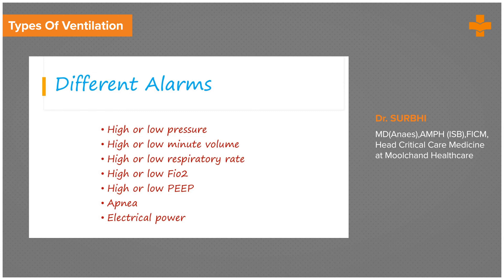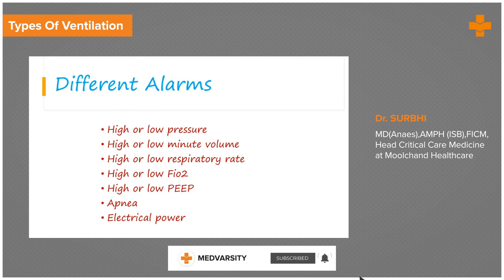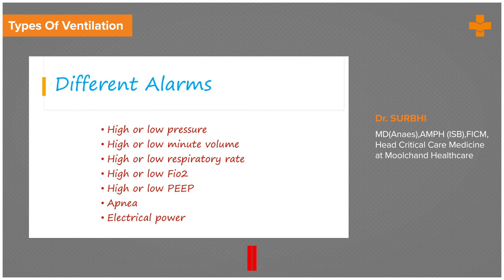Different alarms include high or low pressure alarms, high or low minute volume alarms, and high or low respiratory rate alarms. A high pressure alarm means you should look for tube or ventilator problems. A low pressure alarm might indicate a leak in the system. A high minute volume may mean compliance is too good and you may need to reduce pressure support; a low minute volume means you may need to increase ventilator support. A high respiratory rate may require sedation or management of fever or anxiety; a low respiratory rate may mean the patient requires higher ventilator support.